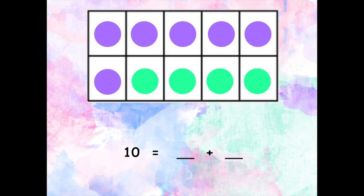Let's count to see how many purple counters I have. 1, 2, 3, 4, 5, 6. There are 6 purple counters. Now, let's count the green counters. 1, 2, 3, 4. There are 4 green counters.